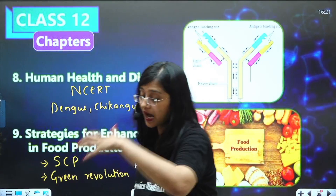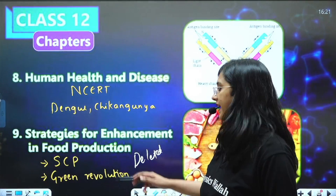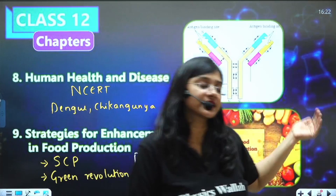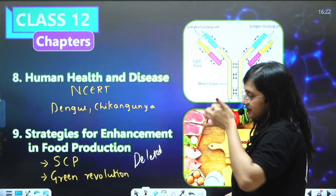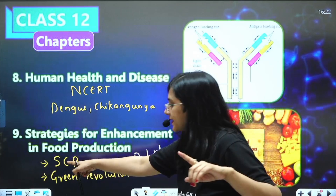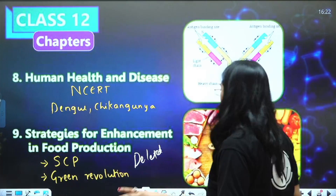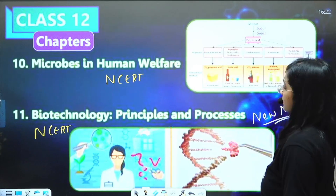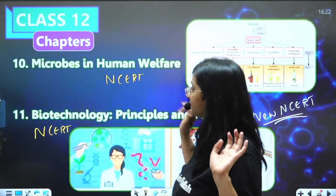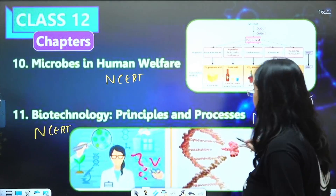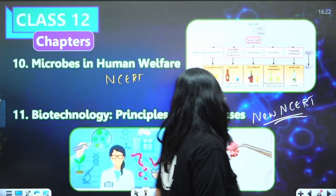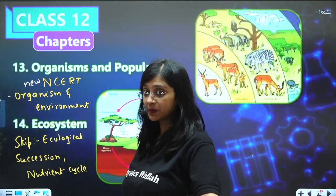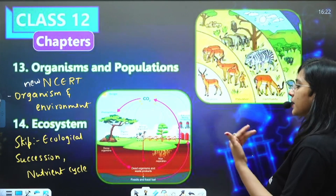Strategies of Enhancement in Food Production is completely deleted, but some concepts from this chapter have been added into Biotechnology Principles and Processes — such as SCP (Single Cell Protein) and Green Revolution. If using old NCERT, study these concepts from that chapter. However, it is recommended to study the Biotechnology chapter from new NCERT, as many extra paragraphs and pages have been added. Microbes in Human Welfare — any NCERT.